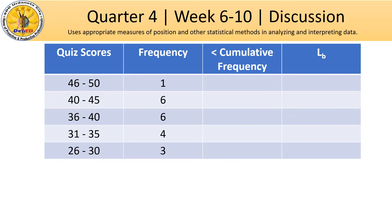The next task is to determine the cumulative frequency. For cumulative frequency, we just have to determine the numbers from the bottom. We start with 3, then add the next frequency 4, giving us 7. Then 7 plus 6 gives us 13. 13 plus 6 gives us 19. And 19 plus 1 gives us 20. That is your cumulative frequency recall.